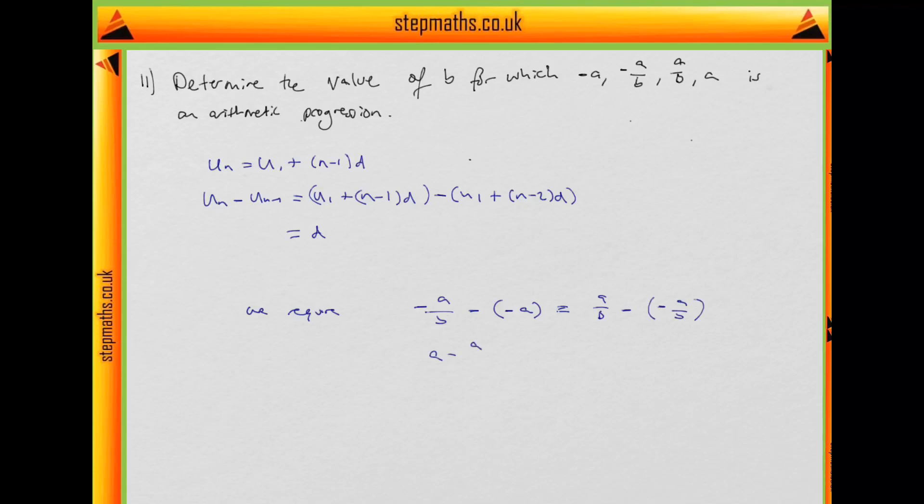So that gives us a minus a over b equals 2a over b. Multiplying by b and dividing by a, we get b minus 1 equals 2 and therefore b is 3.